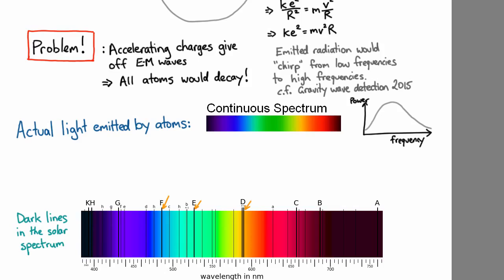When you take a hot gas of atoms rather than a plasma, you see very sharp emission lines.